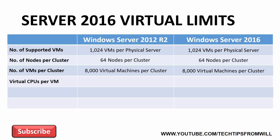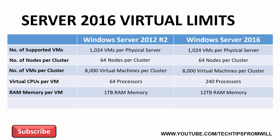In terms of processors that can be allocated to virtual machines, Windows Server 2012 R2 allows up to 64 processors per virtual machine. With Windows Server 2016, this is upped to a maximum of 240 processors. For the RAM memory, Windows Server 2012 R2 permits up to 1TB of RAM for each virtual machine, whereas with Windows Server 2016, impressively you can assign up to 12TB of RAM per virtual machine. Of course, these figures are based on the assumption that the operating system running on the virtual machine can also support that much.